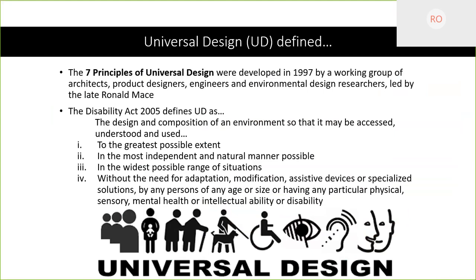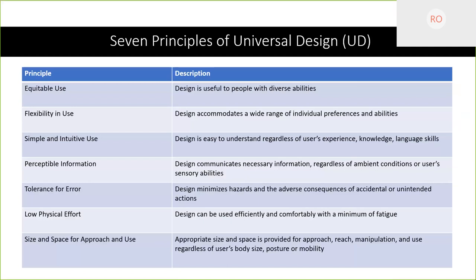Universal design is actually based on the design of physical spaces. It was developed by Ron Mace and colleagues back in the 1990s. Basically, when we're talking about universal design, we're talking about how we can design physical spaces to accommodate people of various sensory, mental health, and intellectual abilities or disabilities. Originally, there are seven principles of universal design — I'm not going to go over all of these right now because I'll come back to it when I talk about universal design for instruction.